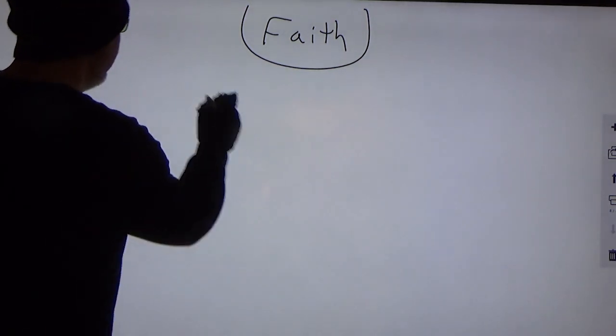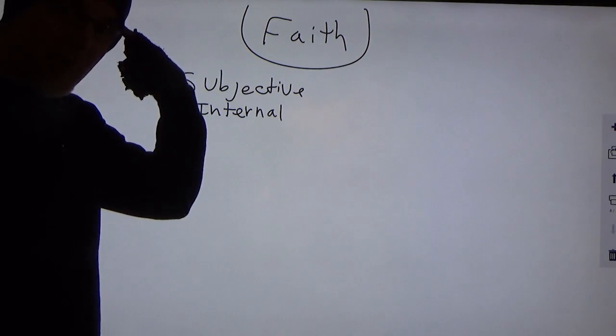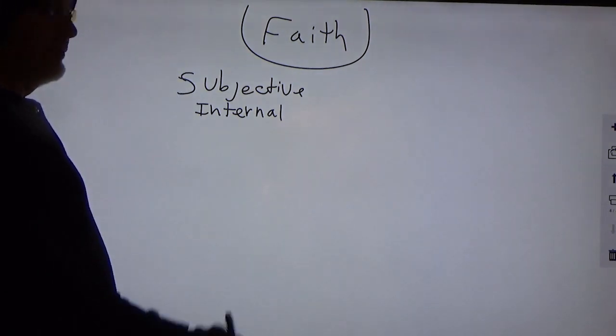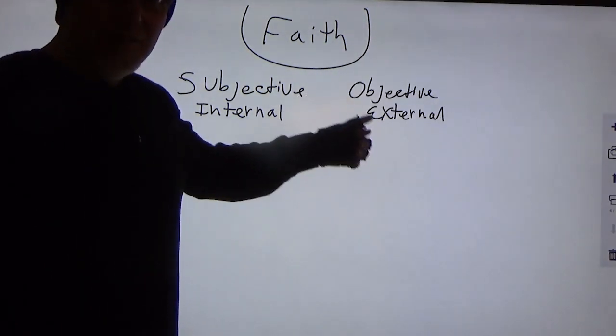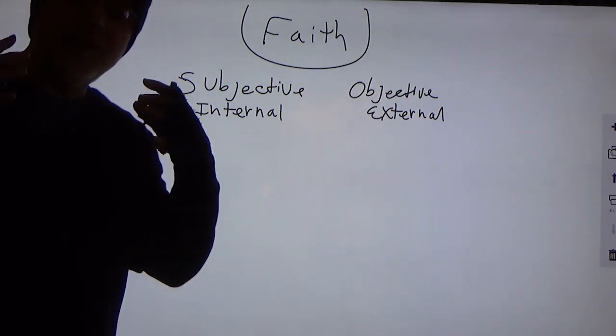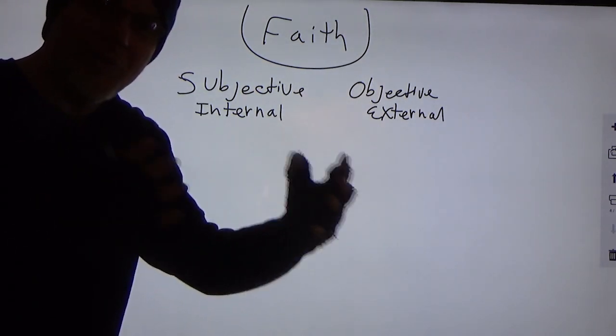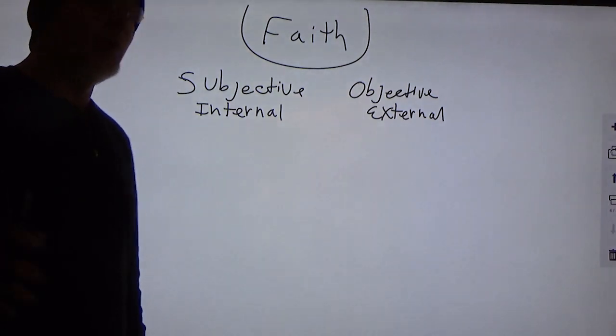So faith has two parts. The subjective internal part, where it exists only in the mind, and the objective external part, where you can actually see somebody's faith in what they're doing physically in the world. So these are the components of faith. The definition of faith is simply believing something that has not been manifested yet while walking out the materialization of that belief, which becomes your evidence.